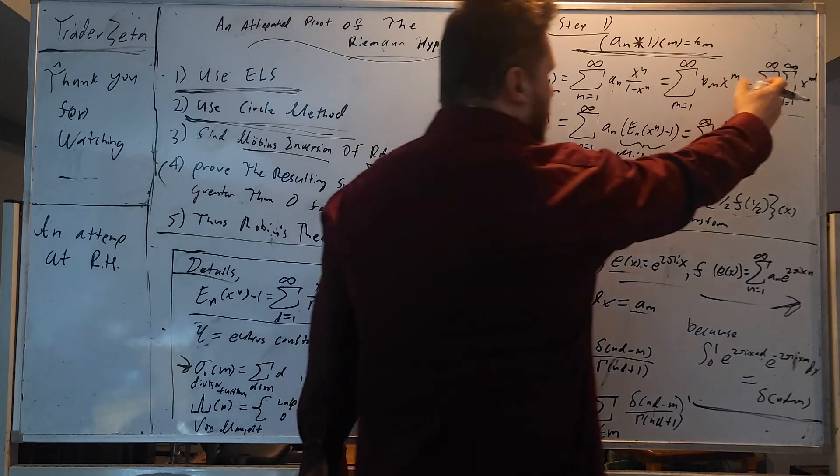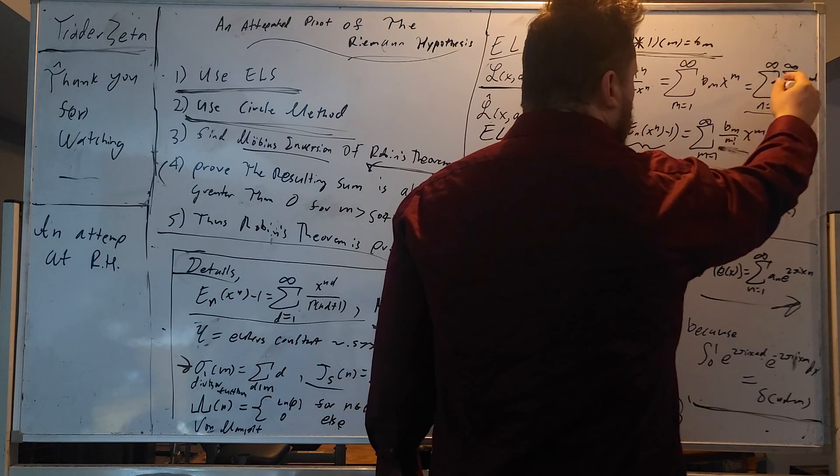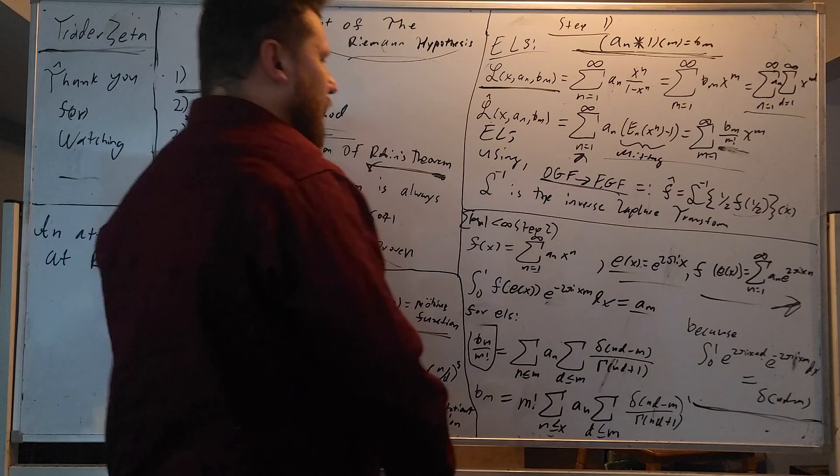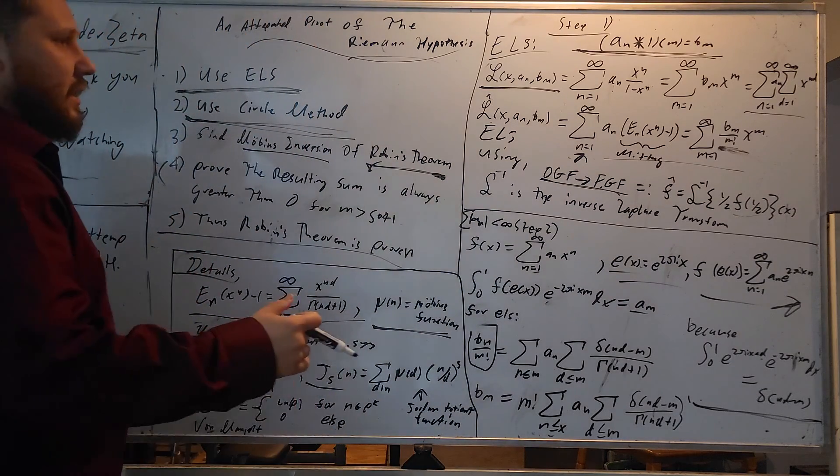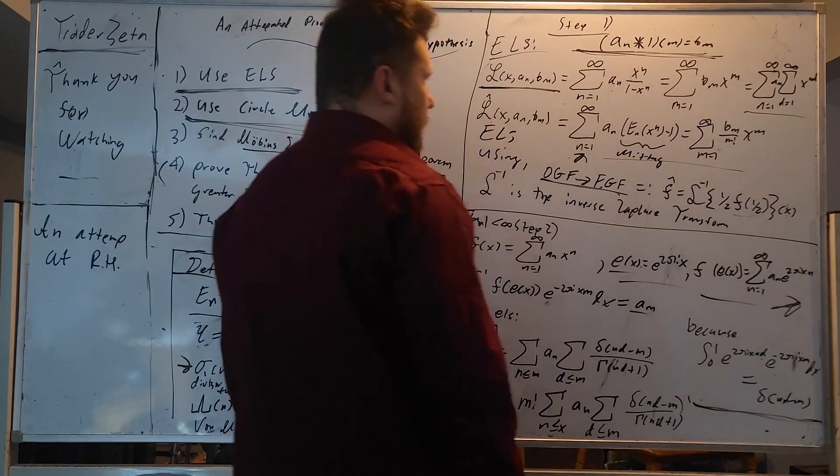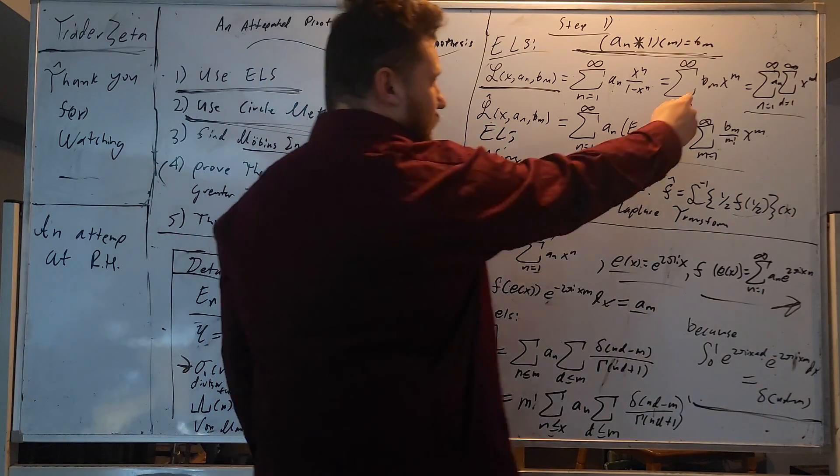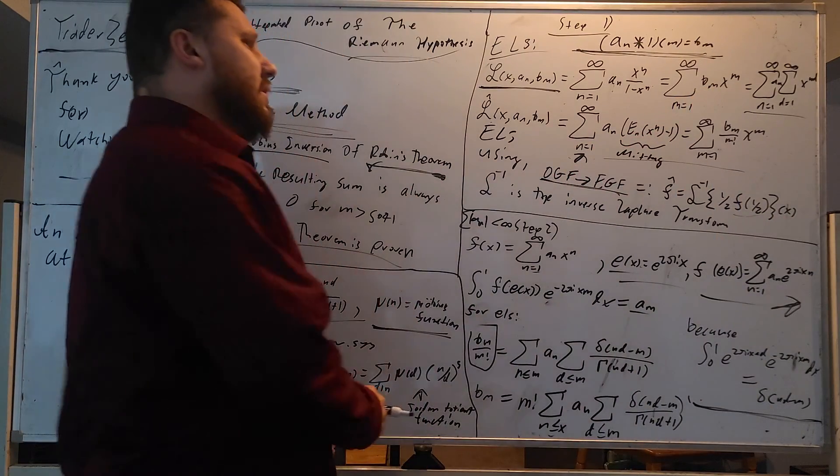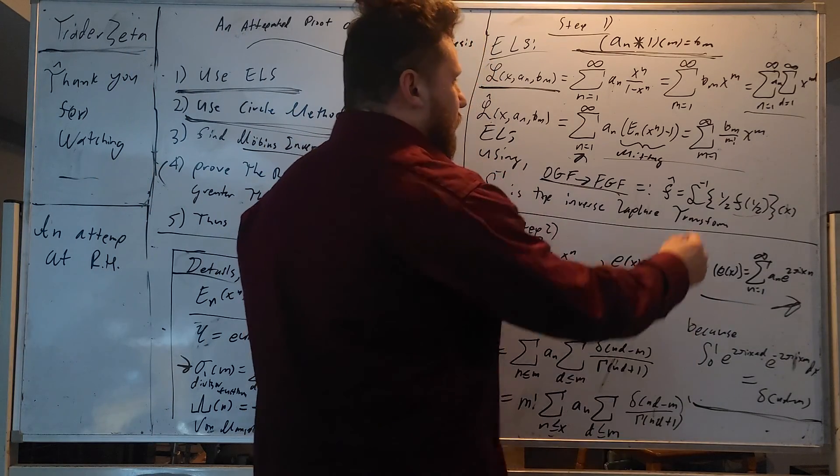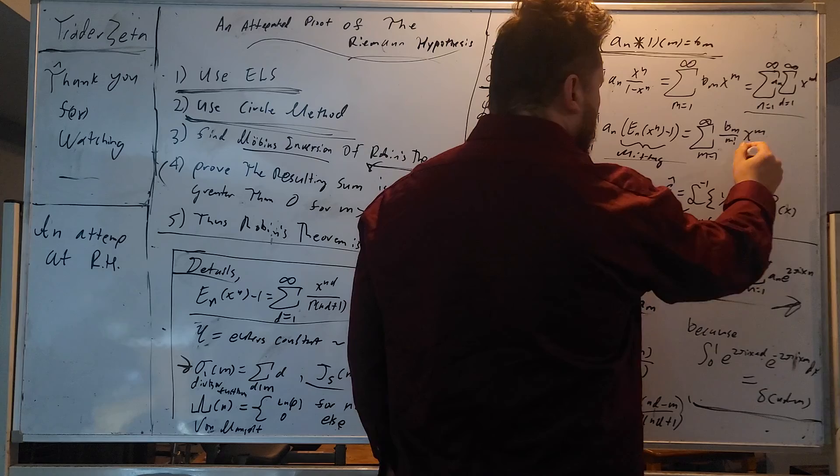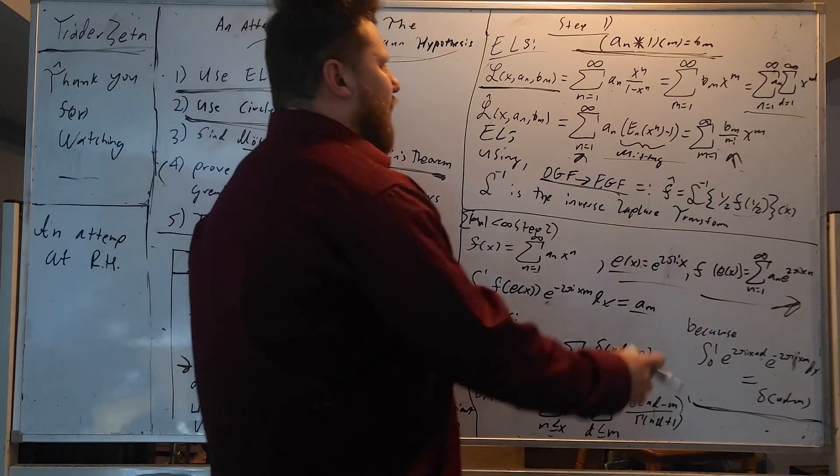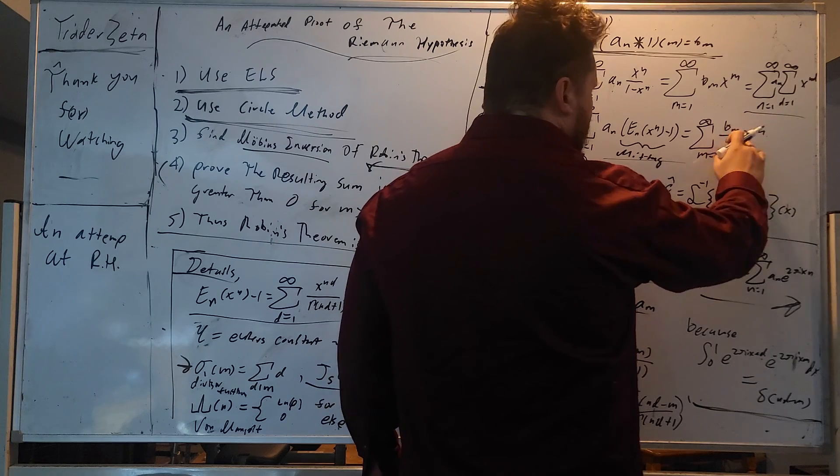So the Lambert series is notated as this curly L of x sub a sub n, b sub n. So we can use these to more or less keep track of all of these sum notations. Sum n equals one to infinity, a sub n, x to the n, one minus x to the n is equal to the ordinary generating function or OGF of b sub n.